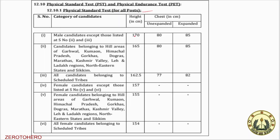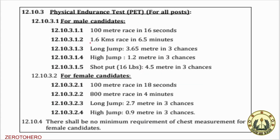If you are a male candidate, you need a height of 170 cm. For female candidates, the requirements are different. For the endurance test, if you are a female candidate, you should be able to run 100 meters in 15 seconds, and 1.6 km in 6.5 minutes.